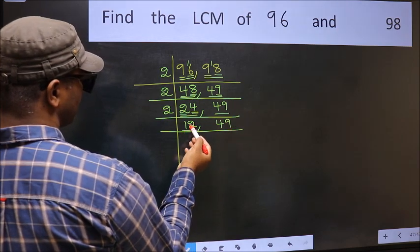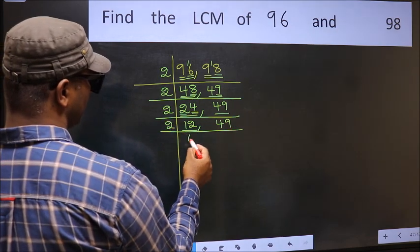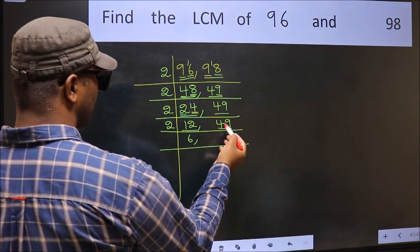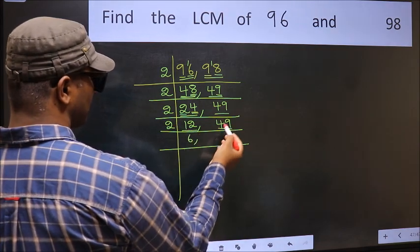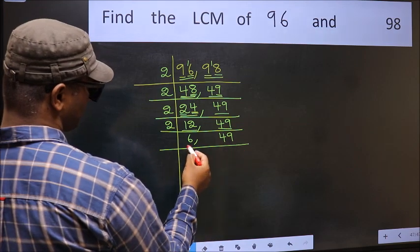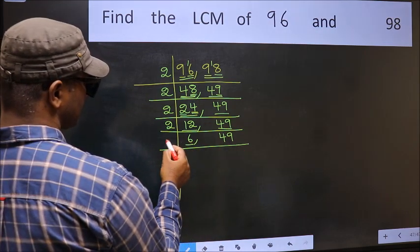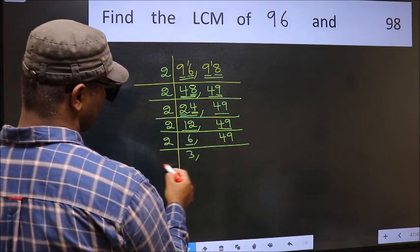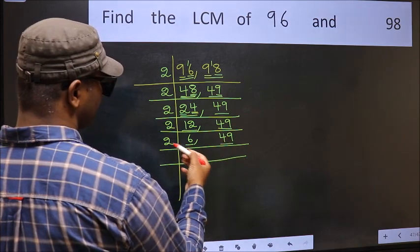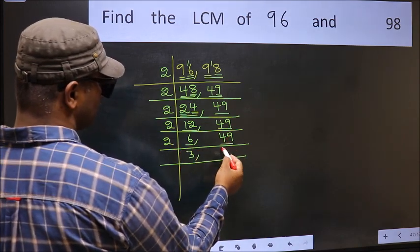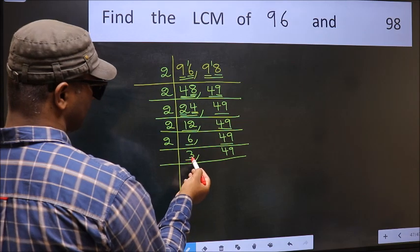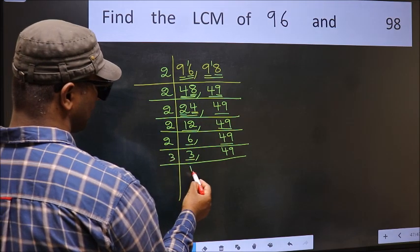Now here we have 12. 12 is 2 sixes are 12. The other number 49 is not divisible by 2, so you write it down as it is. Now here we have 6. 6 is 2 threes are 6. The other number 49 is not divisible by 2, so you write it down as it is.